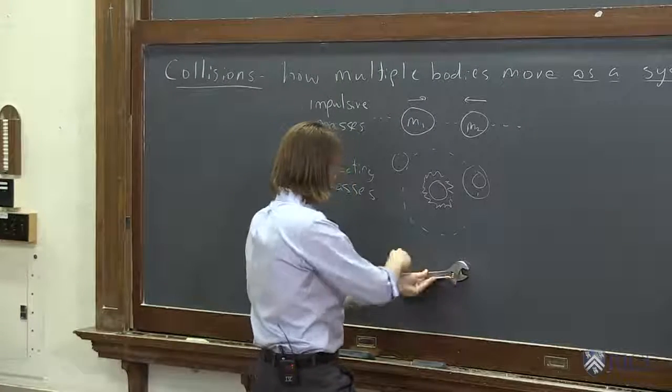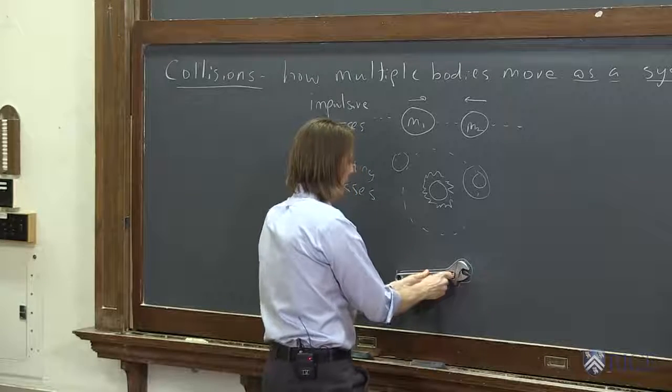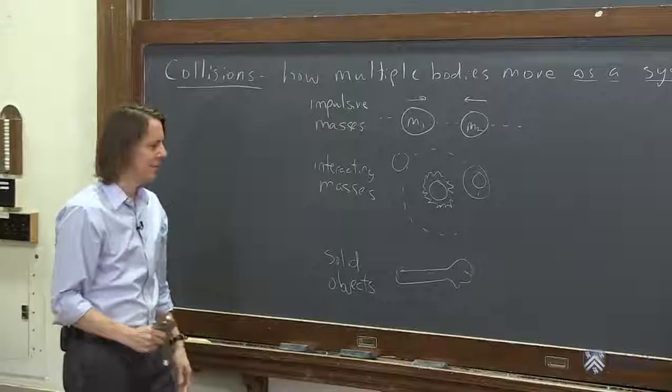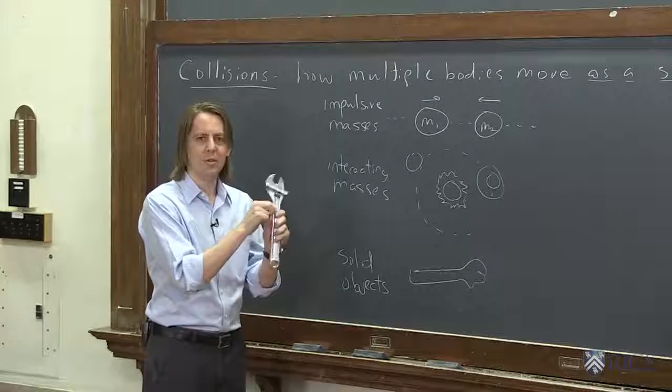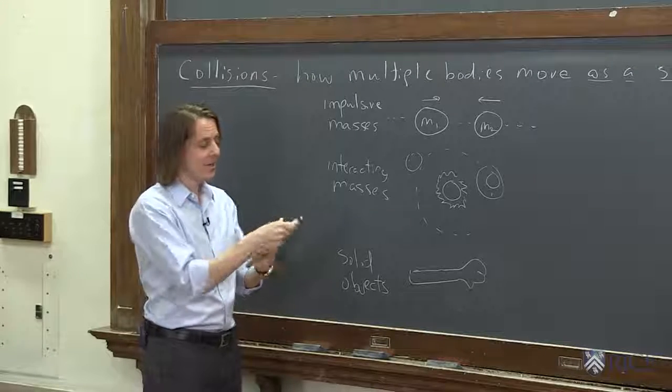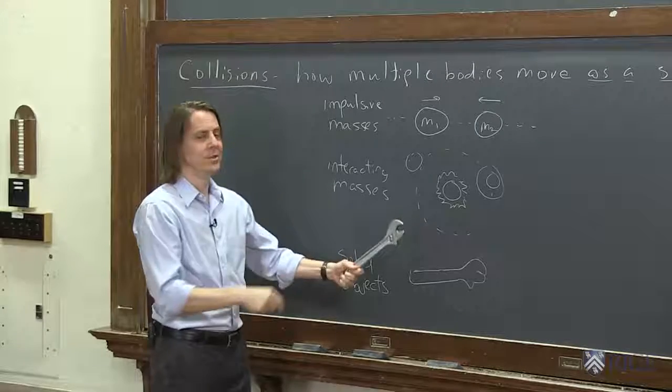This is always the textbook solid object. Here we go. I'm going to give you a perfect drawing of a wrench. Wow, look at that. Yeah, that's not much better. A wrench, a solid object, is really a collection of little individual atoms held together by chemical bonds. But you can actually think of that as a bunch of little elements all interacting and acting as one object.